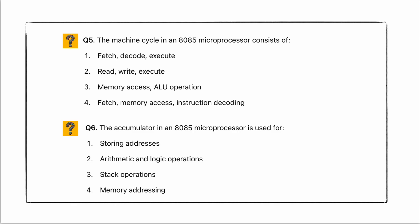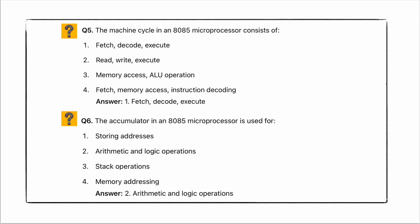Coming to the next question: the machine cycle in the 8085 microprocessor consists of fetch, decode, and execute. The accumulator in the 8085 microprocessor is used for arithmetic and logic operations.